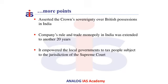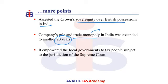Some other provisions of the Charter Act: it asserted the Crown's sovereignty over British possessions in India. The company's rule and its trade monopoly — the tea trade in India and trade with China — was extended for another 20 years. The Act also empowered local governments to tax people subjected to the jurisdiction of the Supreme Court, which was established through the Regulating Act of 1773.